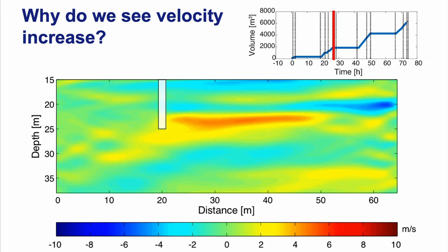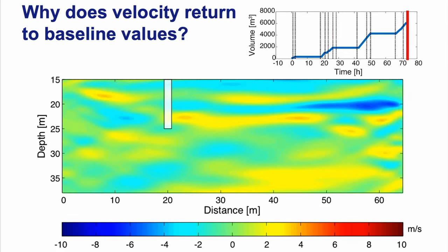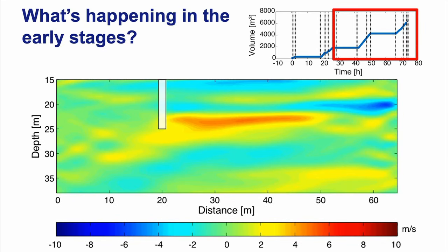There are still several mysteries: why do we see velocity increase during the survey? Our interpretation is we're increasing saturation at depth, but there may be other reasons. Also, why does velocity start to recover toward baseline values even while we're still injecting microbubble water? That is still very mysterious, and we're very happy to discuss ideas.